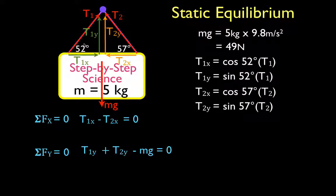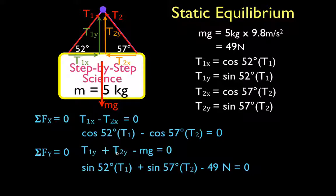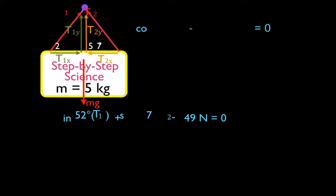Now we can substitute these terms into our two equations and solve for T1 and T2. For the x-direction: cosine 52 · T1 minus cosine 57 · T2 equals zero. For the y-direction: sine of 52 times T1 plus sine of 57 times T2 minus 49 newtons equals zero. On the next slide, we will bring these two equations and solve for T1 and T2.